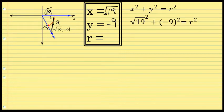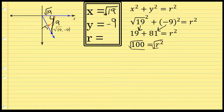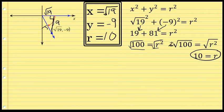x² + y² = r², so (√19)² + (±9)² = r². The square root of 19 squared is 19, and 9 squared is 81. Their sum is 100. Taking the square root of both sides, r = 10. We don't need a ± here because r represents a distance, so a negative value doesn't make sense in this context.